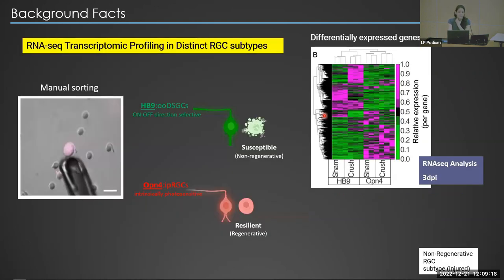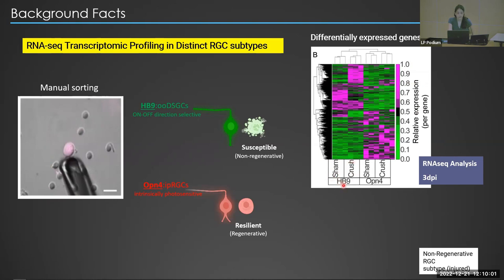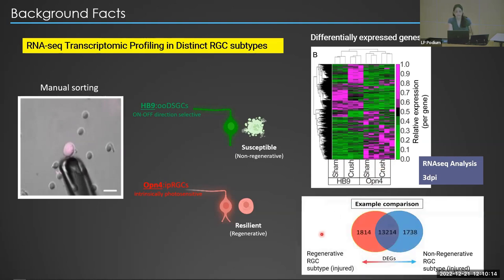Transgenic animals with fluorescently labeled IPRGCs or fluorescently labeled on-off direction selective RGCs underwent optic nerve crush injury or sham surgery. Three days later, retinas were dissociated and plated. Using a pipette, the TDT-labeled IPRGCs or the GFP-labeled susceptible RGCs were collected manually one by one. RNA from these cells was then purified and sequenced. RNA sequencing of HP9, which labels the on-off direction selective RGCs, and OPN4, which labels IPRGCs, shows very nice clustering of samples based on cell type and treatment. In this Venn diagram, we can see many genes differentially expressed in either subtype after injury.